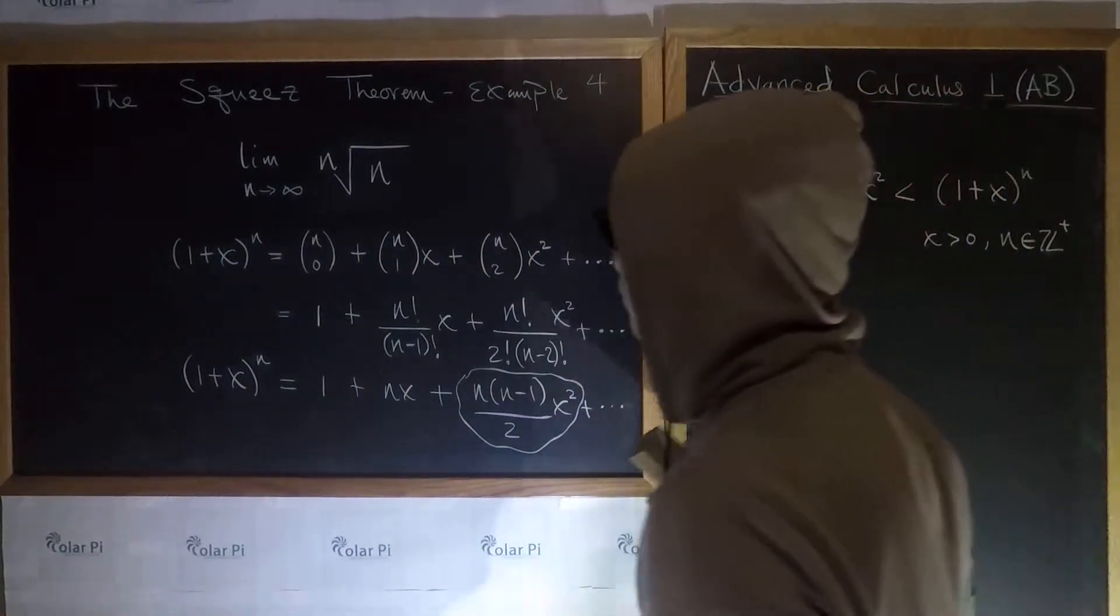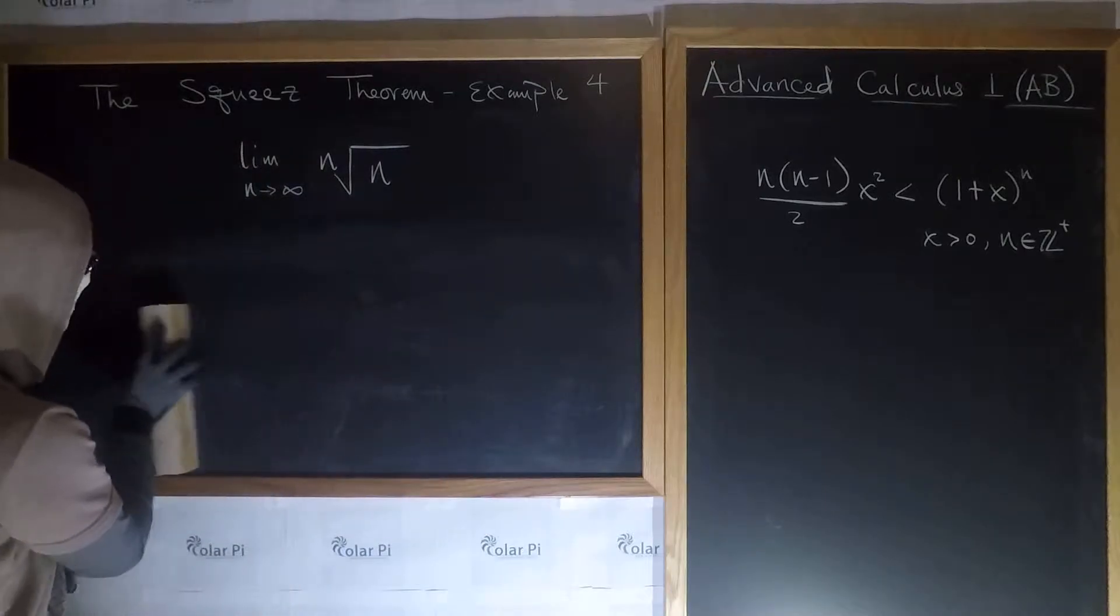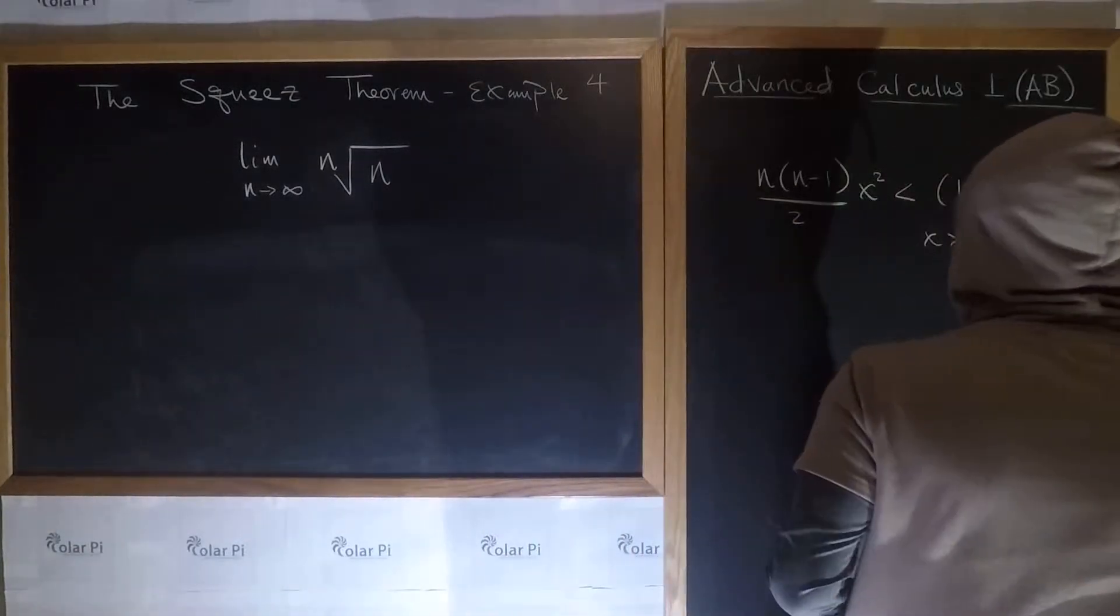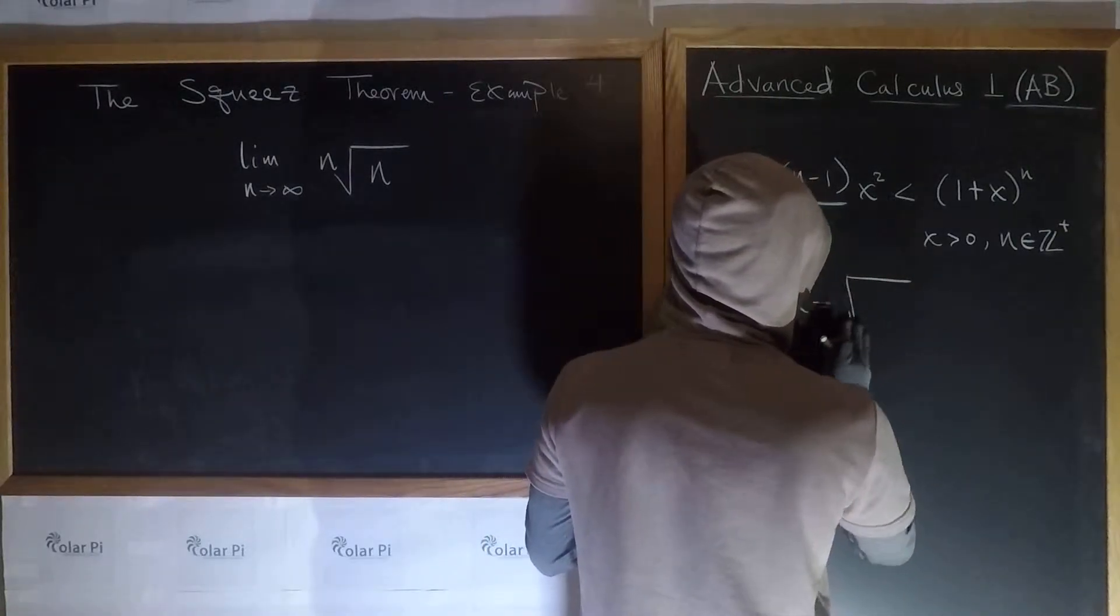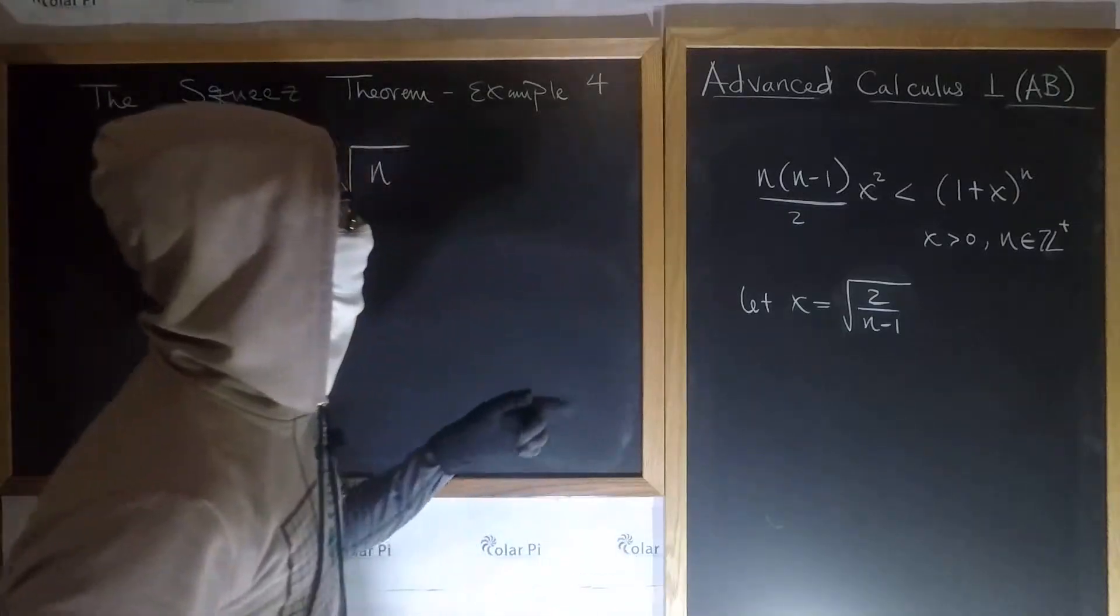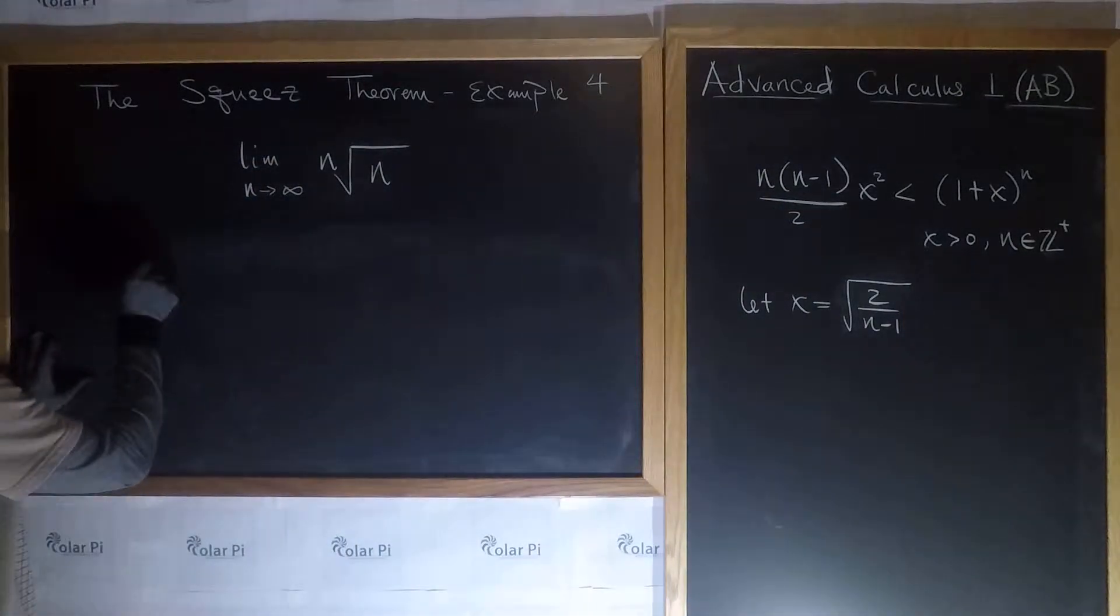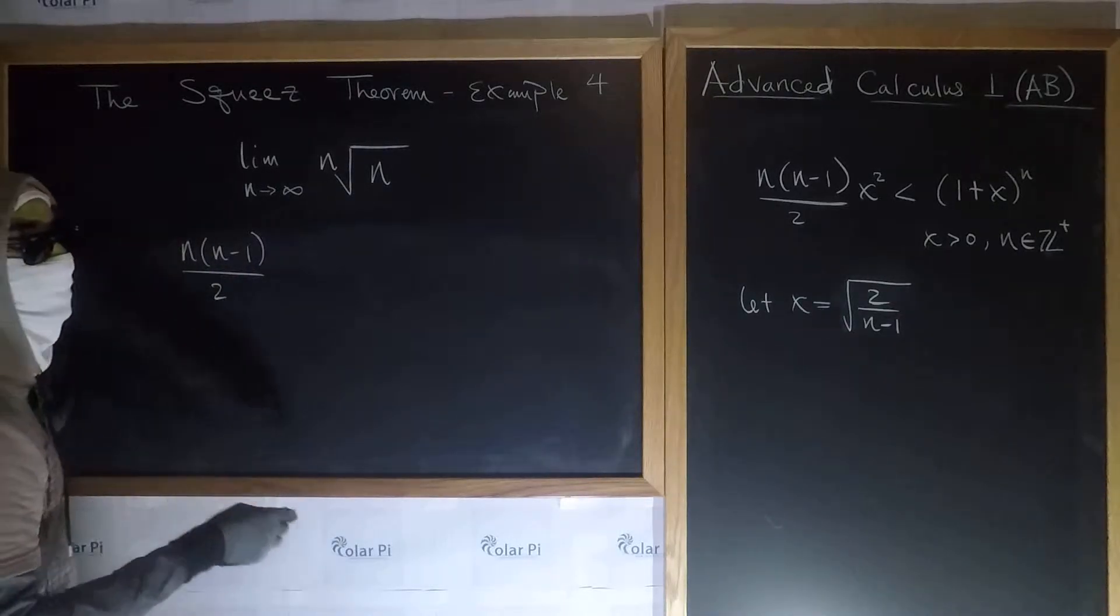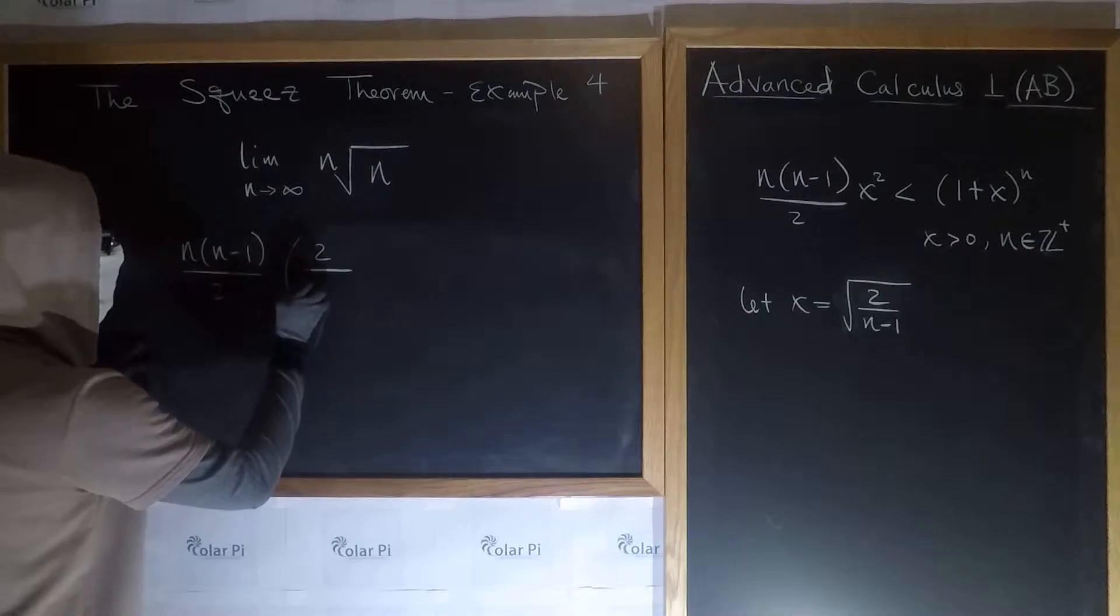Well, here. So to the n that we want, which is ultimately this guy, to the n that we want, we can do this. We can pick a specific x in here, a strategically chosen x, and that x is this. Let x equal, that x equal the square root of, let x equal the square root of 2 over n minus 1, right? If we let x equal that and substitute for this x there and this x there, we can turn that inequality into the following, which is the left side is going to be n times n minus 1 over 2, and then x is this but it's x squared, so it's this squared, and that's going to be 2 over n minus 1.